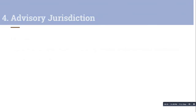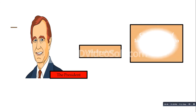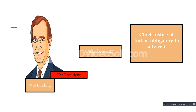Next comes advisory jurisdiction. When the President asks for the opinion of the Supreme Court, the court is bound to give advice, but the President is not bound to follow it. When asked, the Supreme Court — through the Chief Justice of India — has an obligation to provide advice to the President. However, the President has no obligation to follow the advice of the Chief Justice of India.